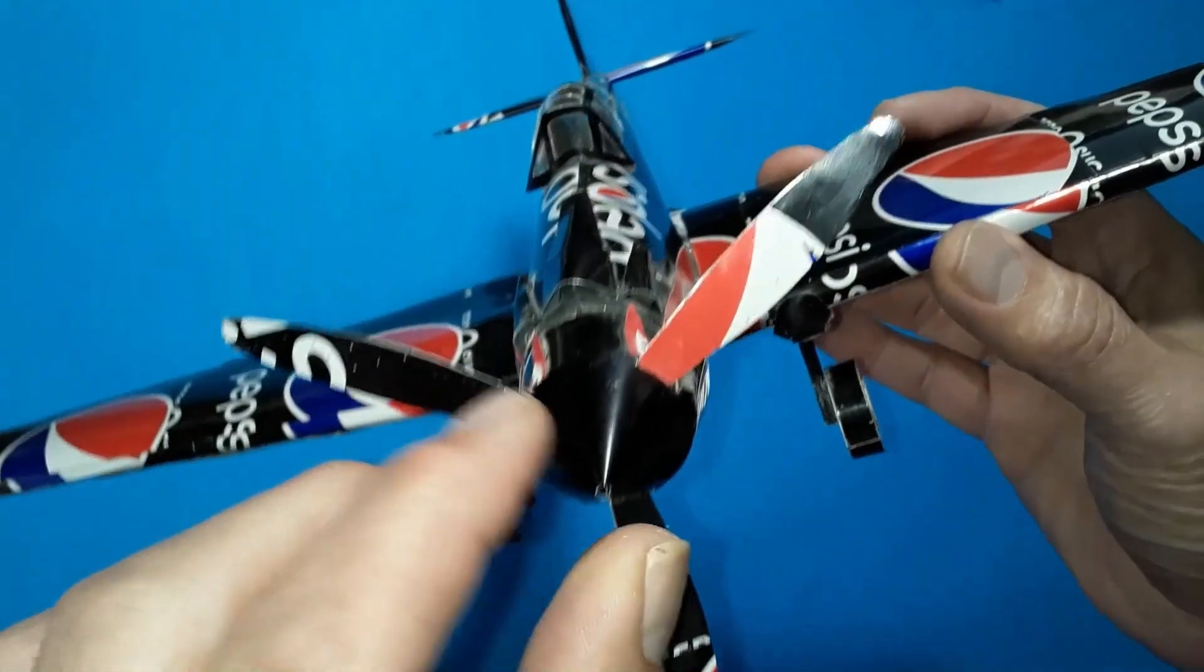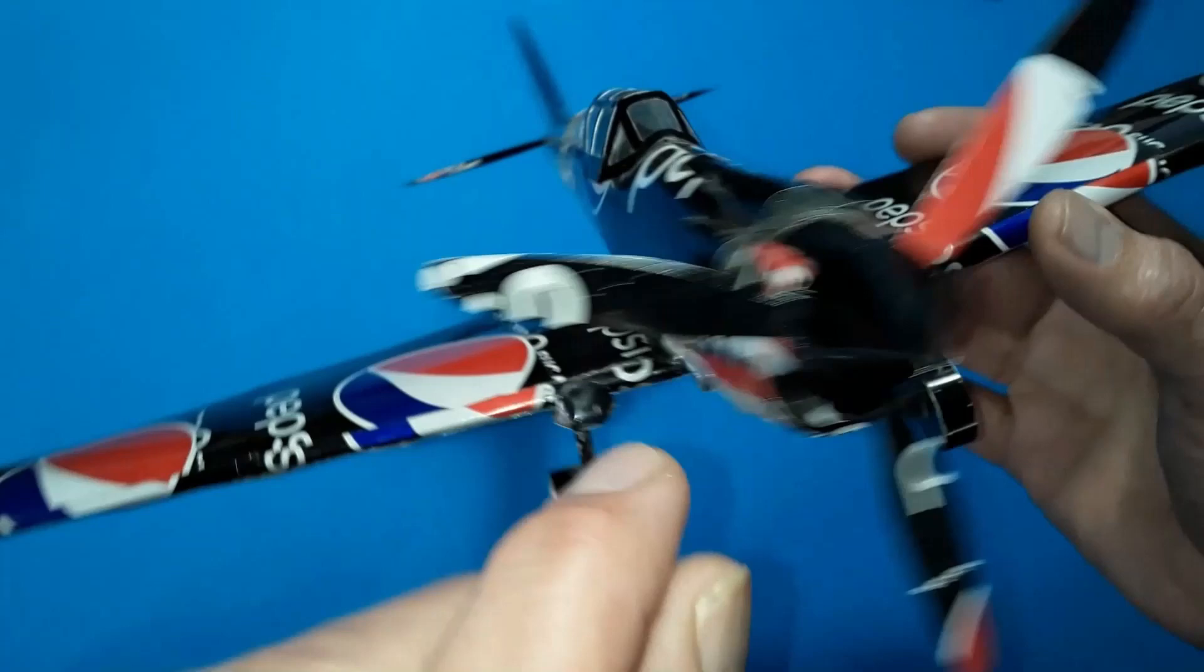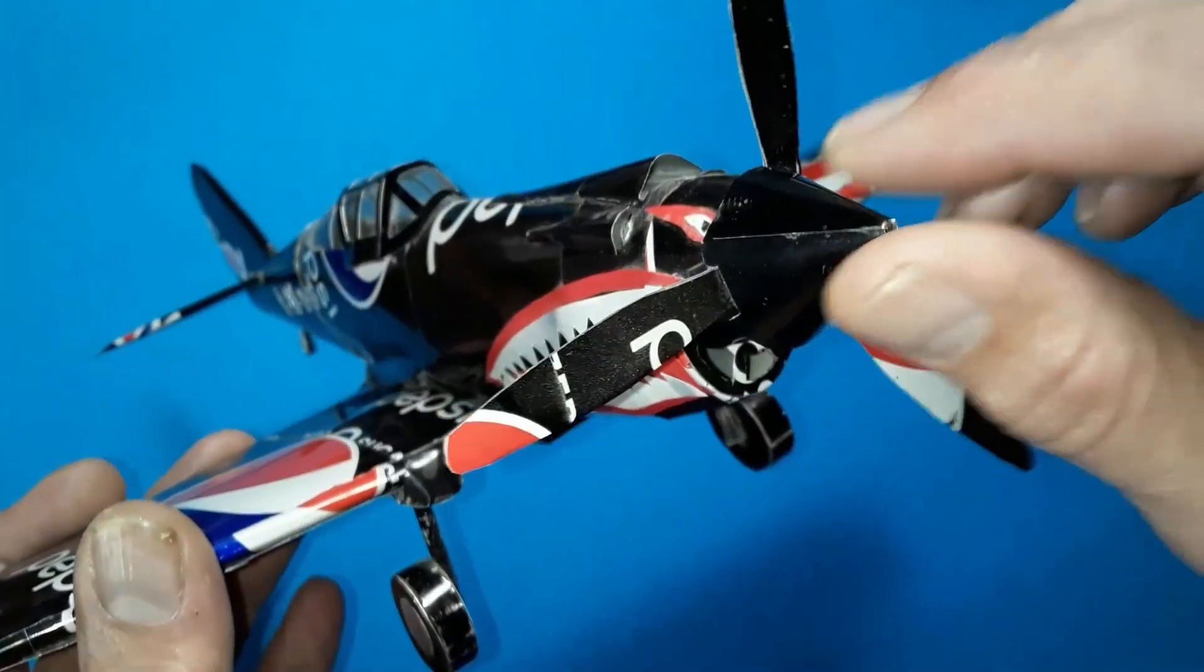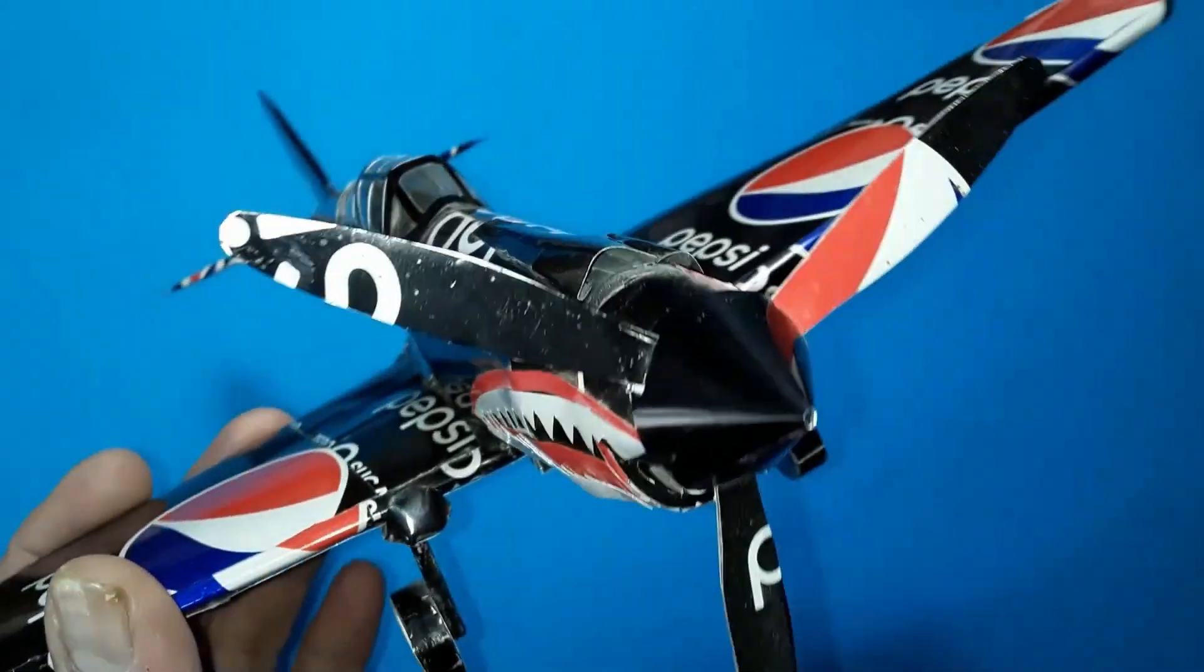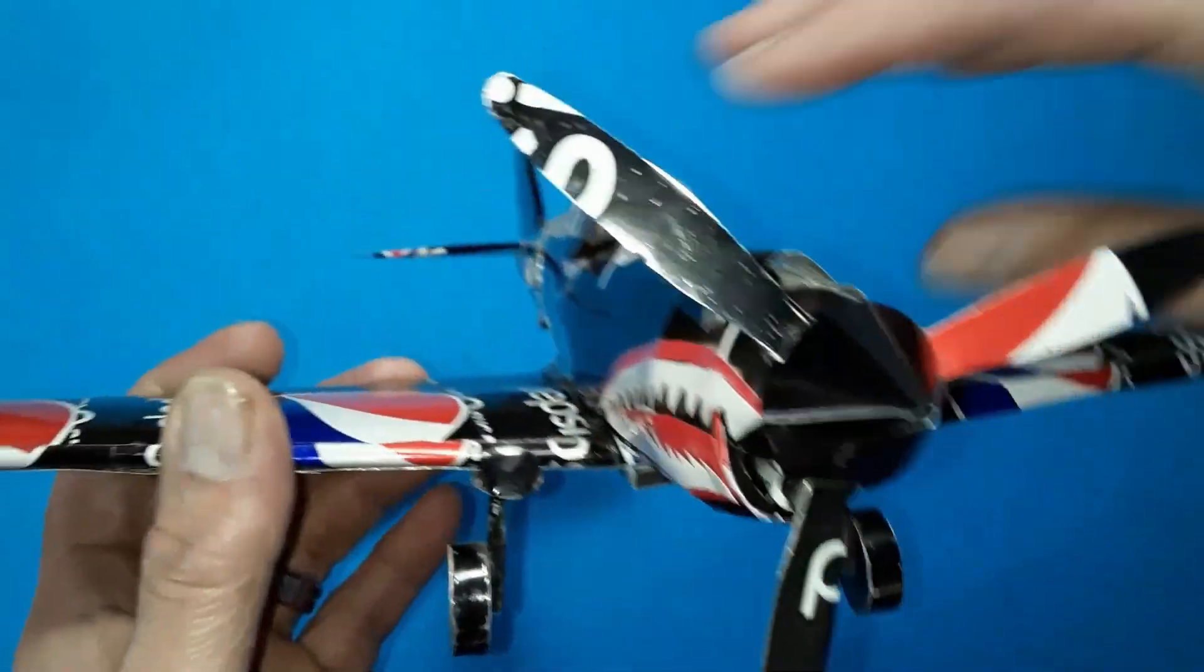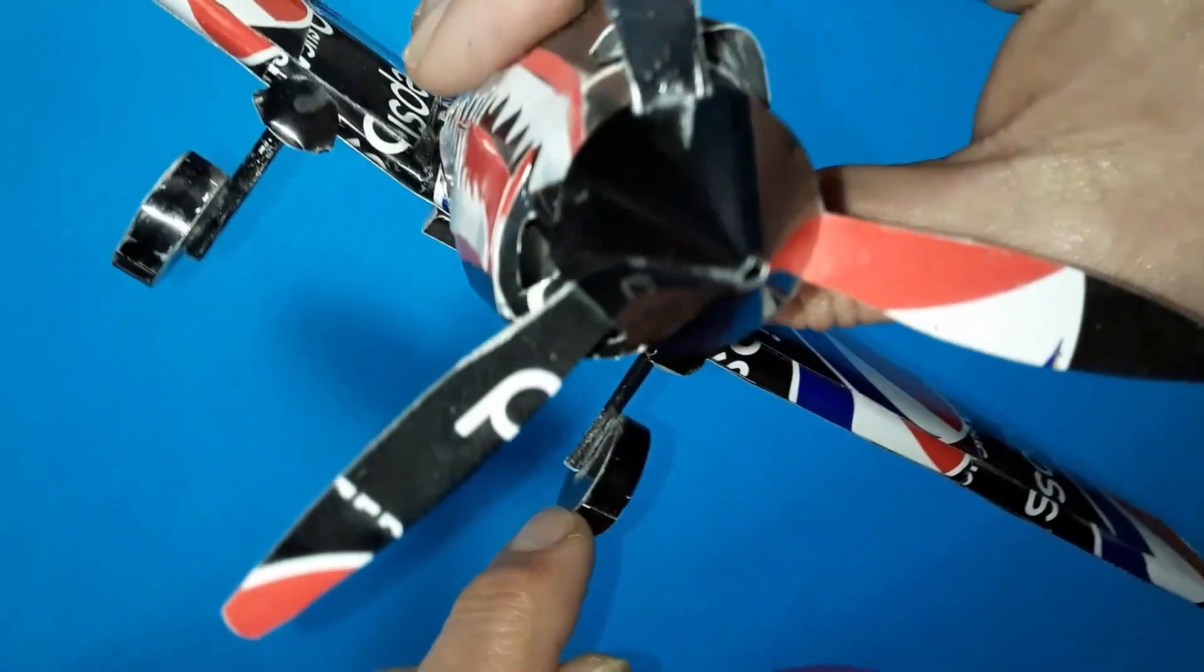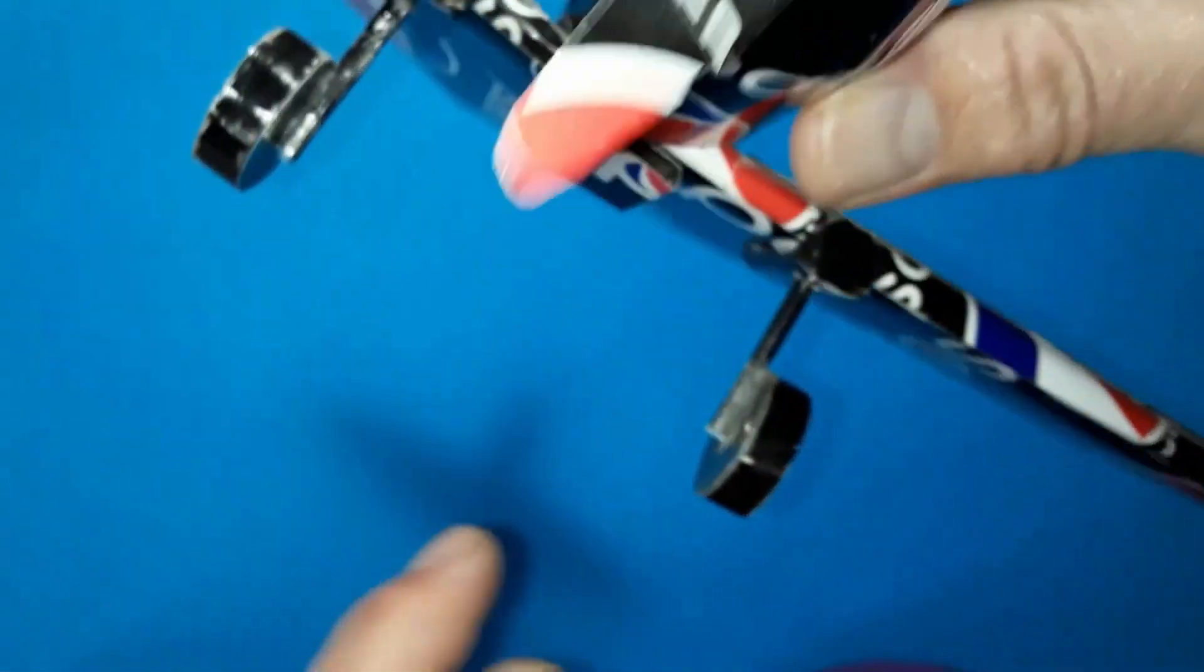check out our P-40 Warhawk from Sky Captain and the World of Tomorrow. It's an amazing soda can model plane. Isn't it? Again, look at how we produced a working three-bladed propeller and spinner. It really gives this plane an added touch that radio control plane parts can't replicate.